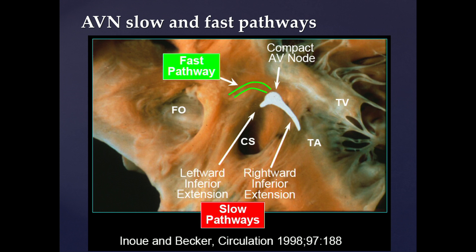When we talk about AV nodal reentry, it's really reentry in the tissues that surround the AV node. The AV node — what we call the compact AV node — is a comma-shaped structure in the annular aspect of the right atrium, very close to the tricuspid valve and on top of the coronary sinus ostium. The AV node connects with atrial tissues through two main pathways.